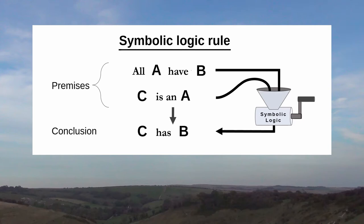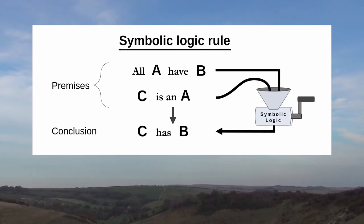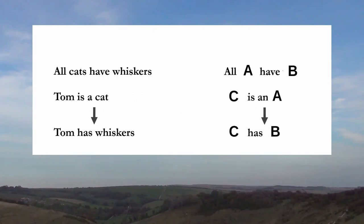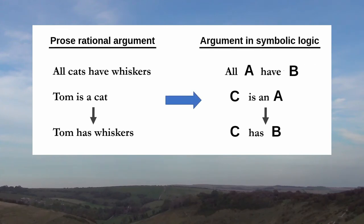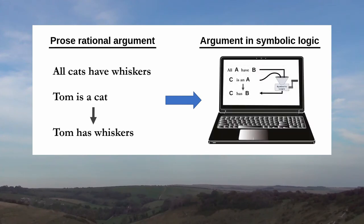One thing that has changed since Aristotle's time is that we now have computers, machines that can systematically follow these symbolic rules. So today, we can make the case for a slightly newer, more precise definition of what counts as a rational argument by linking it to our notions of formal systems and computation. So in the case we've been looking at, we can say that the prose logical argument is a rational argument because it can be supported by an equivalent symbolic argument whose conclusion could be calculated by a computer.